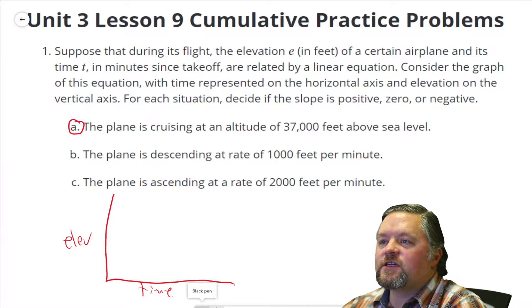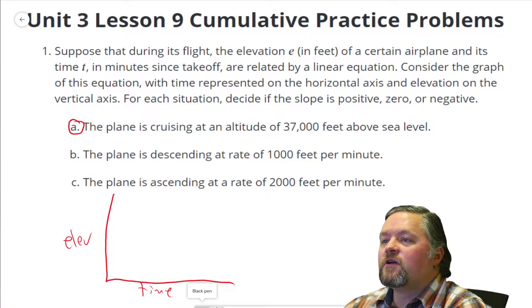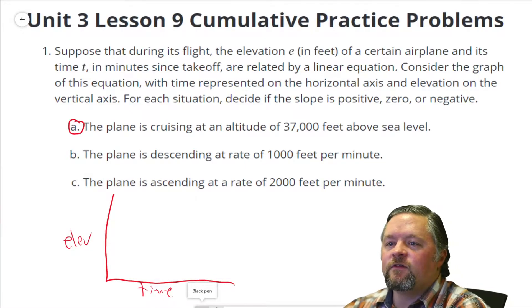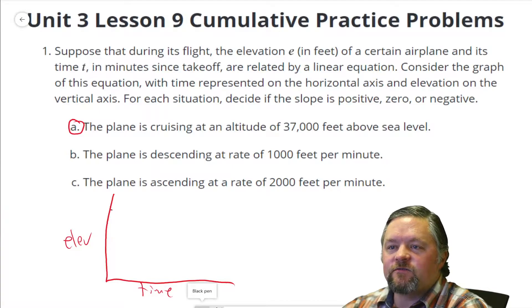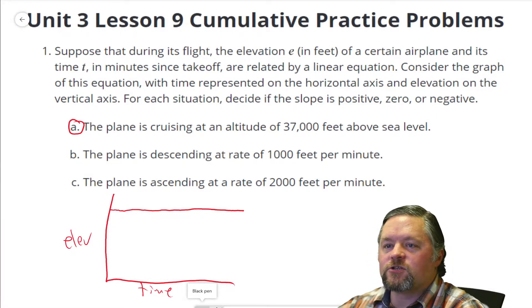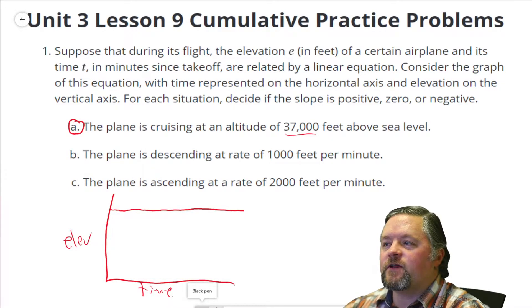The plane is cruising at an altitude of 37,000 feet above sea level. We want to know if the slope is positive, zero, or negative. If we are cruising at an altitude of 37,000 feet, what's our slope going to look like? We're just staying along as time goes forward. Our elevation is staying 37,000 feet. That slope is zero. That line is going neither up nor down.